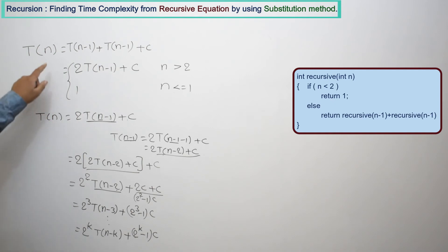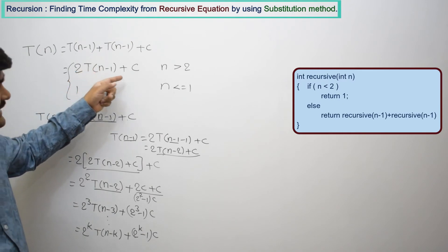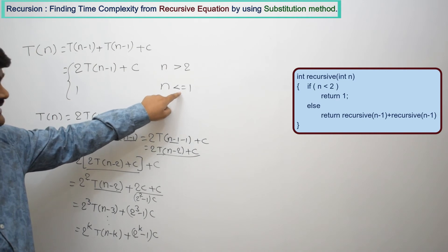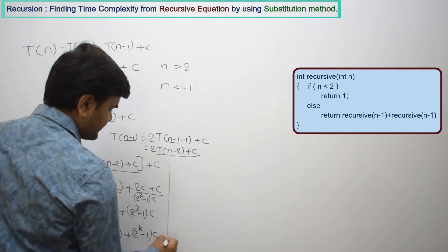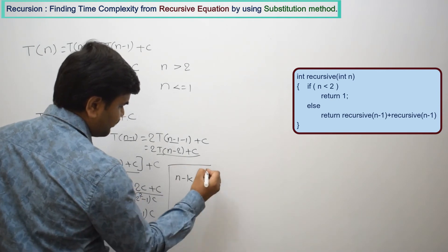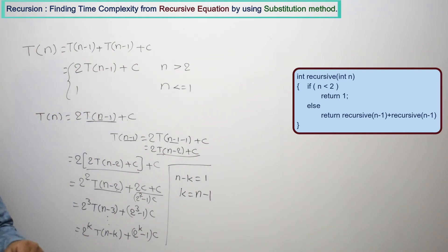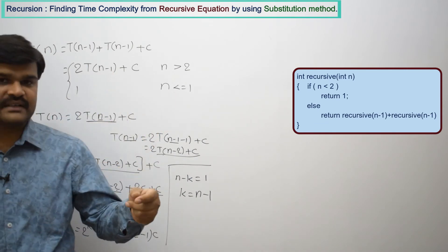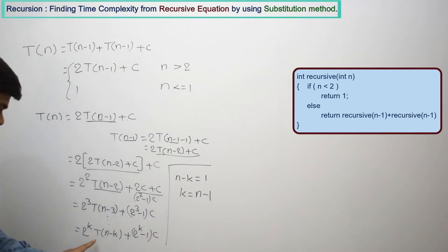Now we need to find what the value of k is. For example, if you take n = 10: 10-1=9, 9-1=8, 8-1=7 — and so on, it keeps reaching 1. After how many function calls does it reach the base condition? We assume n-k = 1, meaning the base condition is reached. So k = n-1, meaning after n-1 function calls it reaches the base condition. You can observe this directly because every time we reduce by 1, after n-1 function calls it will reach the base condition. So in place of k, we substitute n-1.